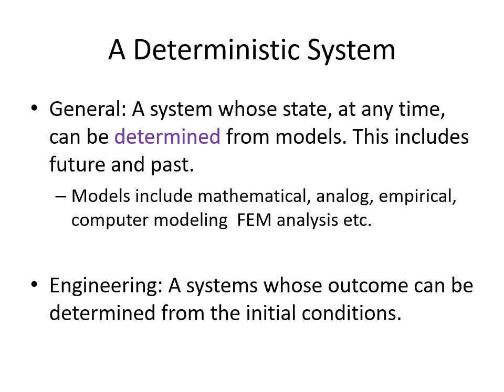In engineering, we might make this a little simpler and say that a deterministic system is a system whose outcome can be determined from the initial conditions. In other words, if you put all the ingredients for a cake in a mixing bowl and you follow all the steps, what you're going to get out at the end is a cake — not a pie, not a cheesecake, not a donut.